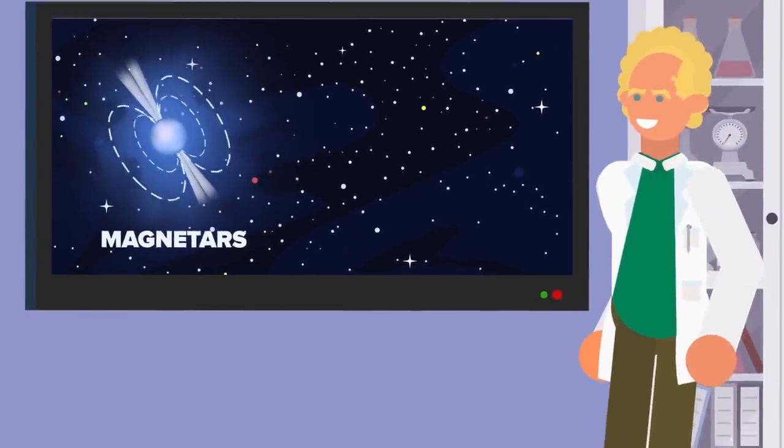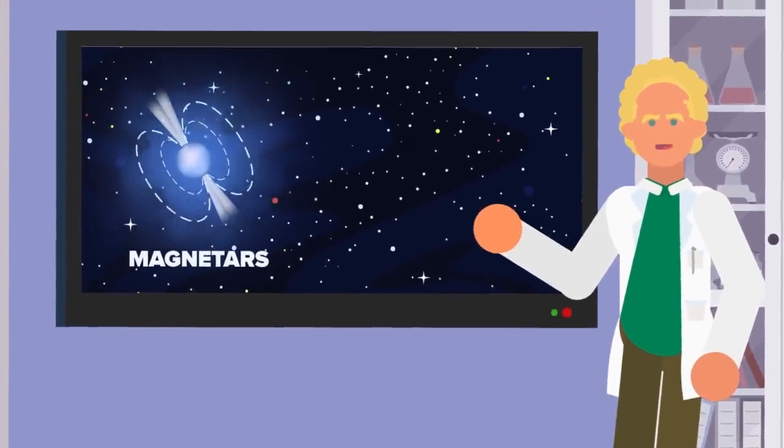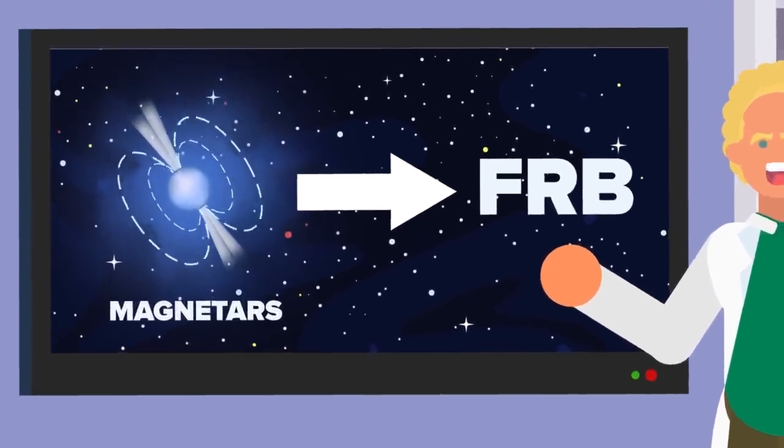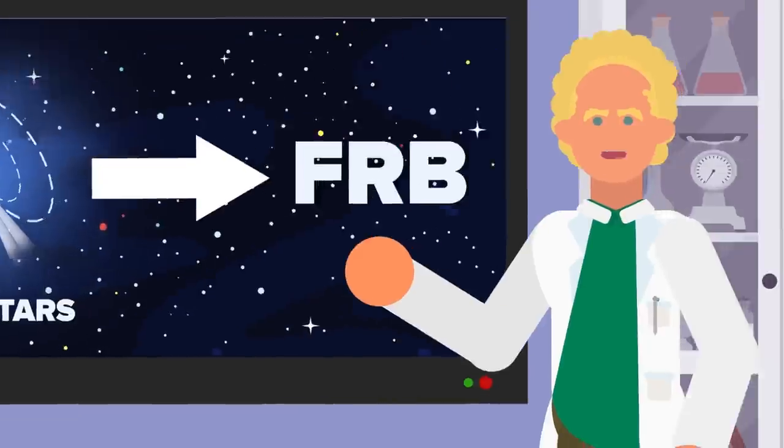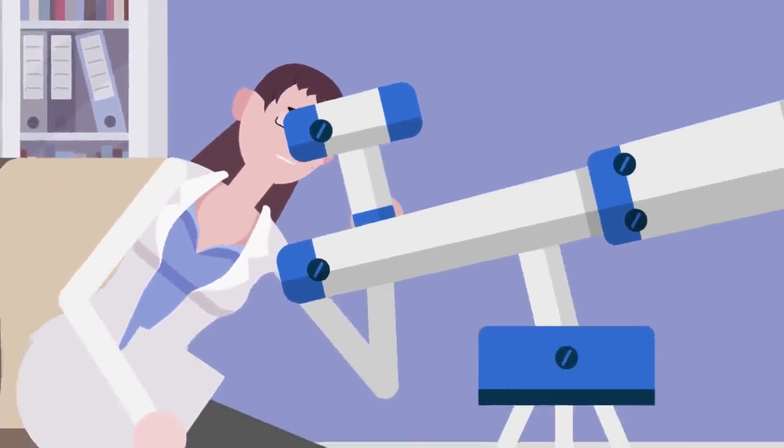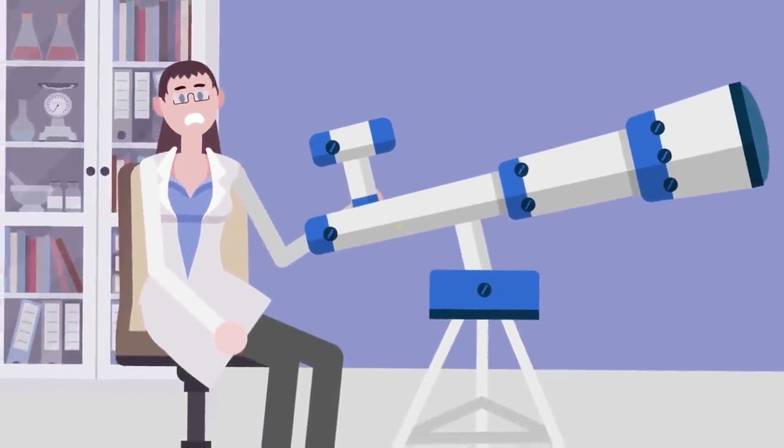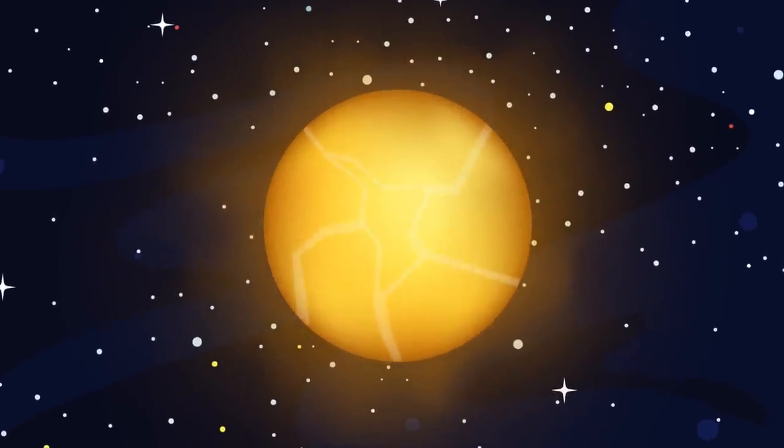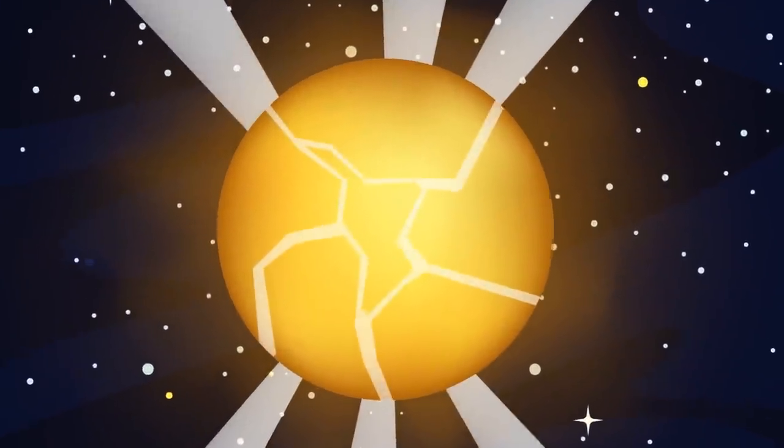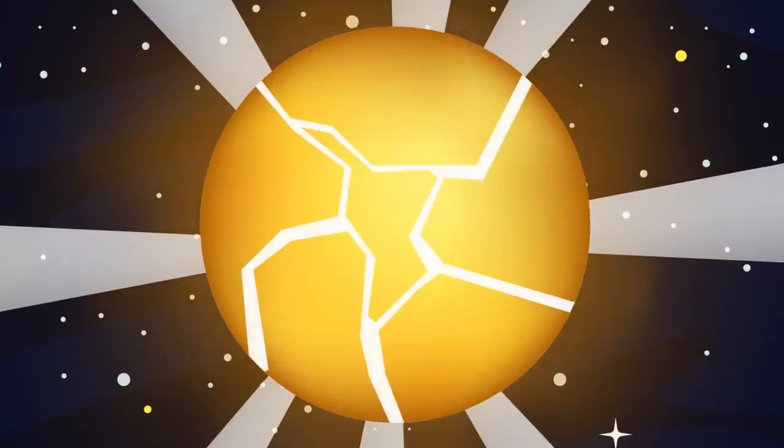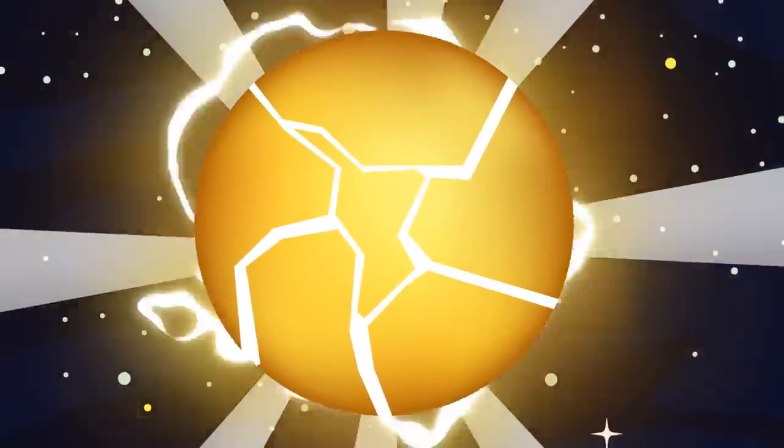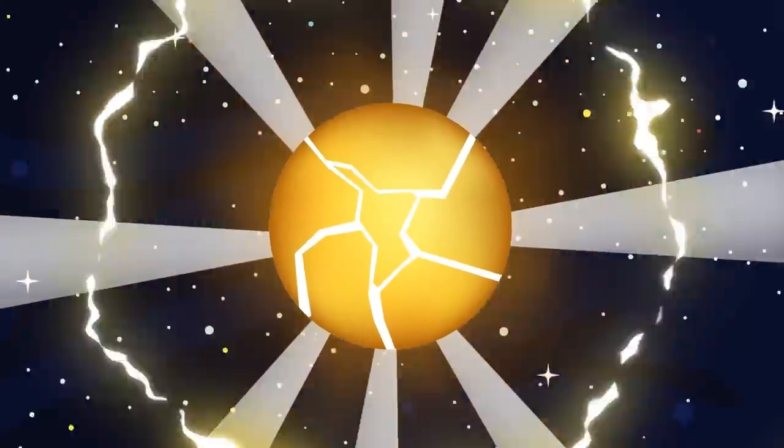Yet another theory is that the FRBs are created by magnetars, rare neutron stars with incredibly powerful magnetic fields. Astronomers have observed magnetars suddenly flaring in an immense burst. Possibly these bursts are caused by starquakes, a sudden disturbance of the magnetar structures that release built-up stresses from their swirling magnetic fields. Some of the energy is most likely expressed as radio waves.